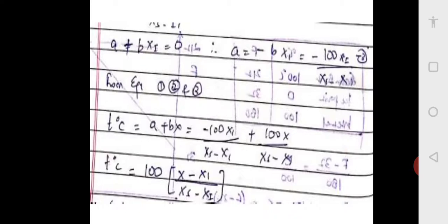So considering all these equations — equation one: t equals a plus bx; equation four: b equals 100 divided by x_s minus x_i; and equation five: a equals minus 100·x_i divided by x_s minus x_i — we now have all components needed for substitution.